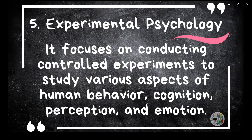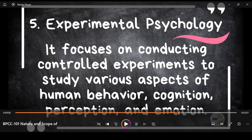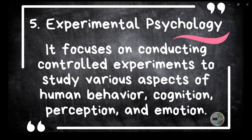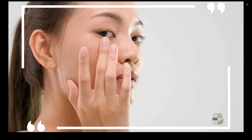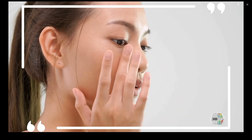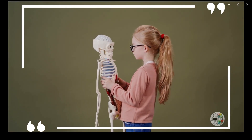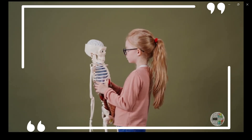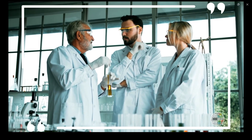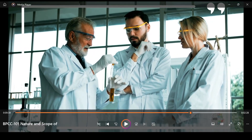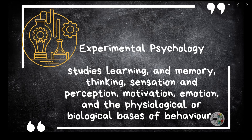Number 5: Experimental psychology. Experimental psychologists are interested in exploring theoretical questions, often by creating a hypothesis and then setting out to prove or disprove it through experimentation. They study a wide range of behavioral topics among humans and animals including sensation, perception, attention, memory, cognition, and emotion. Despite its name, experimental psychology is distinguished not just by its method but by what it studies — the fundamental processes of learning, memory, thinking, sensation, perception, motivation, emotion, and the physiological or biological basis of behavior.